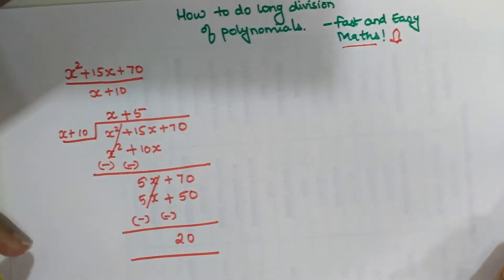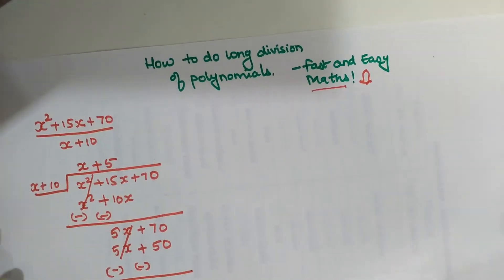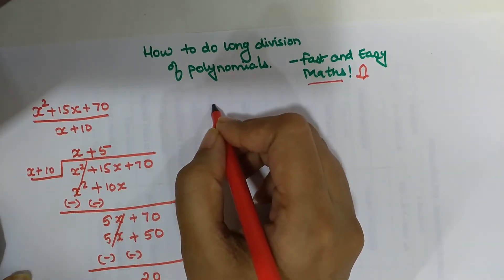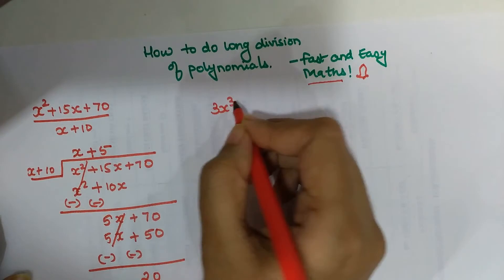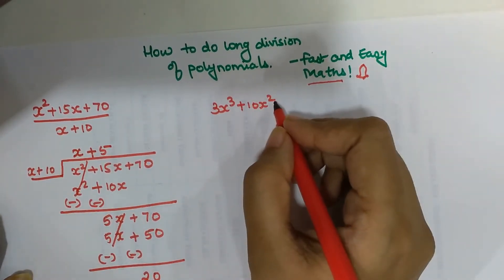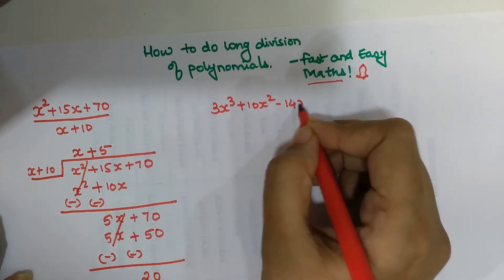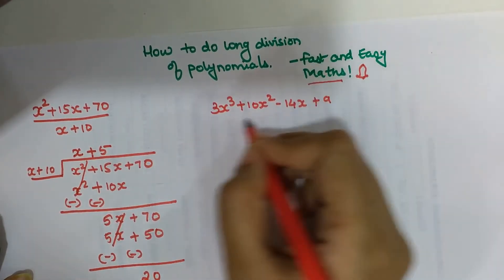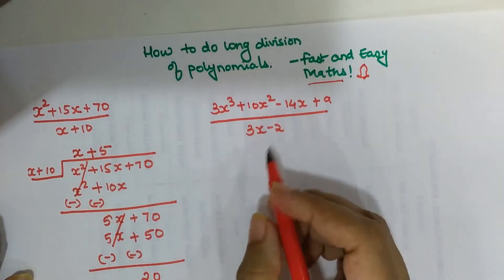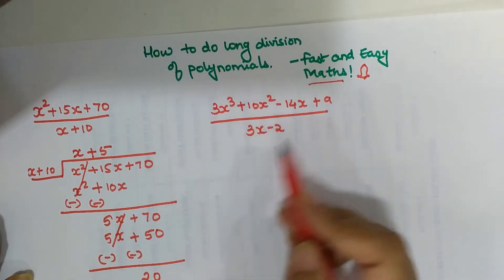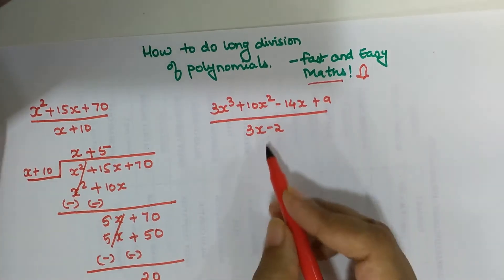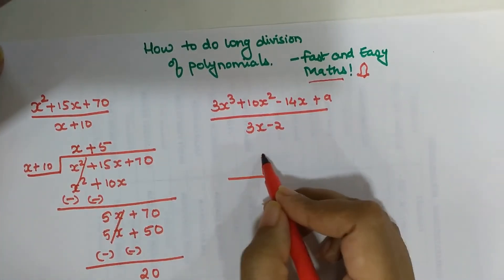Now let's try solving another polynomial. We have 3x cubed plus 10x squared minus 14x plus 9, which is to be divided by 3x minus 2. As we can see there is nothing common between the numerator and denominator, so we will directly start the division.